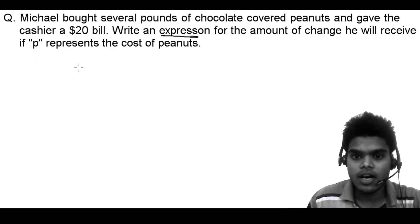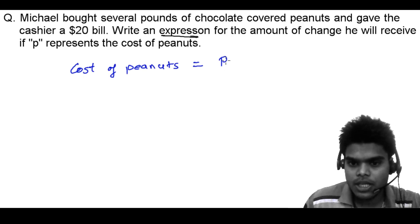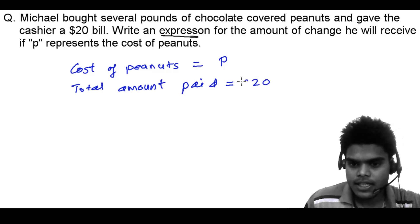So what are the things we are given? The cost of peanuts equals P. Total amount paid equals $20. Michael paid $20, so he should receive some amount. That's not going to cost $20 for some peanuts.